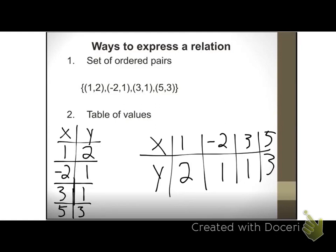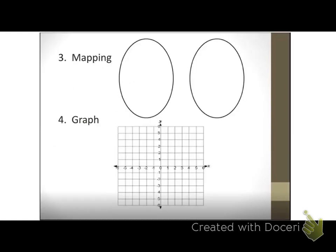Next one's called a mapping. Our ordered pairs are (1, 2), (-2, 1), (3, 1), (5, 3). We can fill in what we call a mapping.